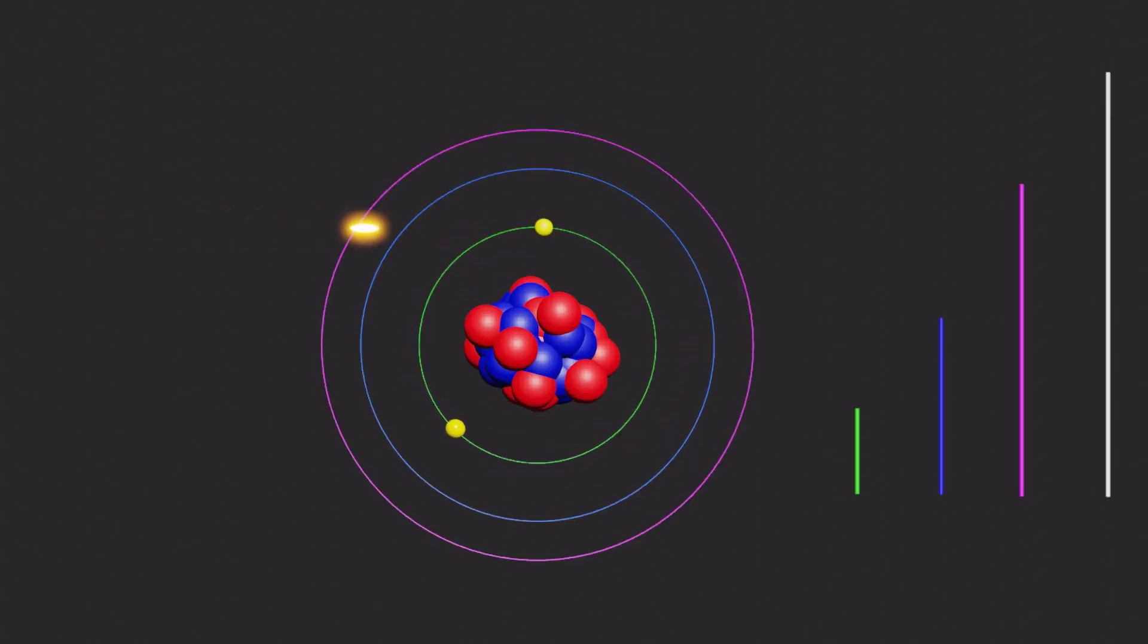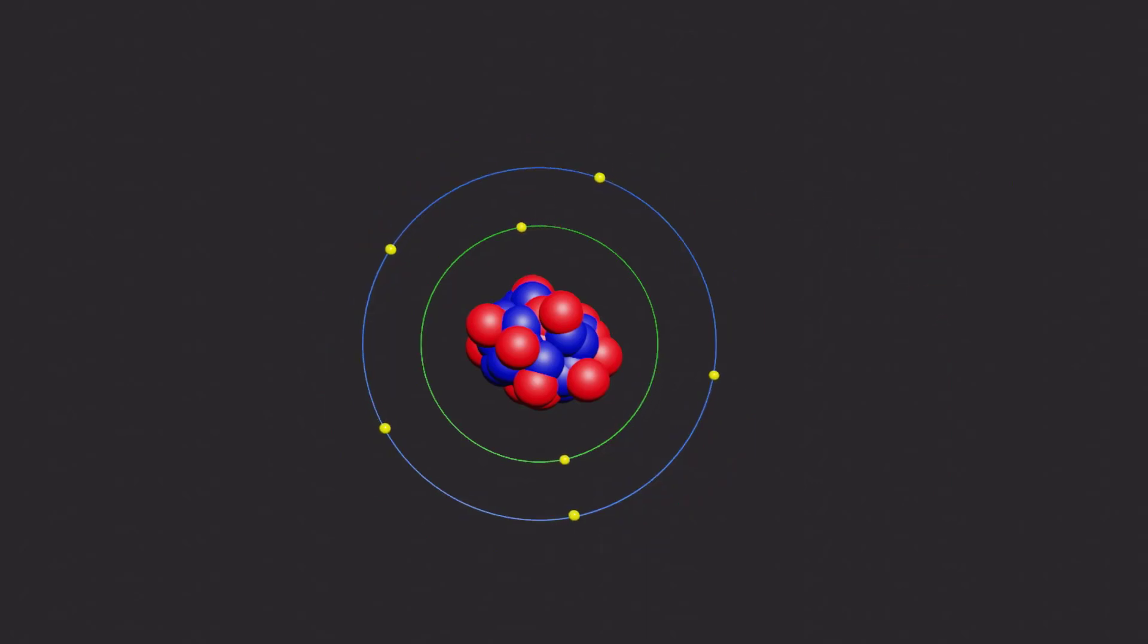Niels Bohr presented the model of the hydrogen atom in 1913. The model consists of a small, dense nucleus surrounded by orbiting electrons, much like the planetary model of the solar system.